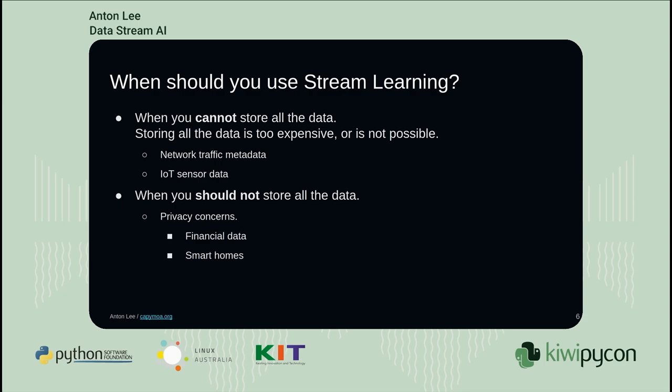Examples include financial data and smart homes. The final category is when it's not worth storing the data, but it is useful for making decisions. If you have a sensor that collects the light in a room, that's very useful right now, but you don't want to keep that around for five or ten years. Stream learning is a way of using that and incorporating other data streams to make useful decisions now. Data stream learning also gives you tools for aggregating data in a really efficient way.